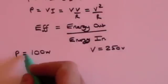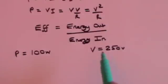This is the power. It's a 100 watt bulb, and it's going to be attached to a voltage, which is 250 volts. So the first thing I can do is to calculate the current.